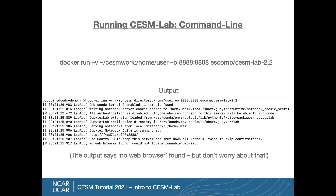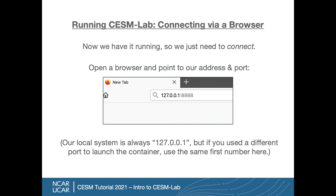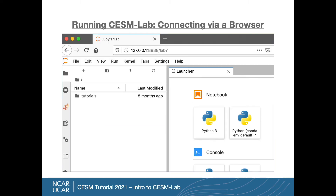At this point, if you've done either of the prior steps, you should have a running container, but not really much to show for it yet — that's just because it runs as a background process. To do anything, we need to connect to it. We'll do that by opening up a web browser — Firefox shown here — and connect to our local system on the port we provided when launching it. Open up the browser, go to 127.0.0.1:8888, or whatever port you used instead of 8888, and press enter. You should be greeted by the Jupyter Lab welcome screen. There's not a lot to see here yet, especially if we didn't map in an existing directory, but we do have this tutorials directory, which is what we're going to explore next.